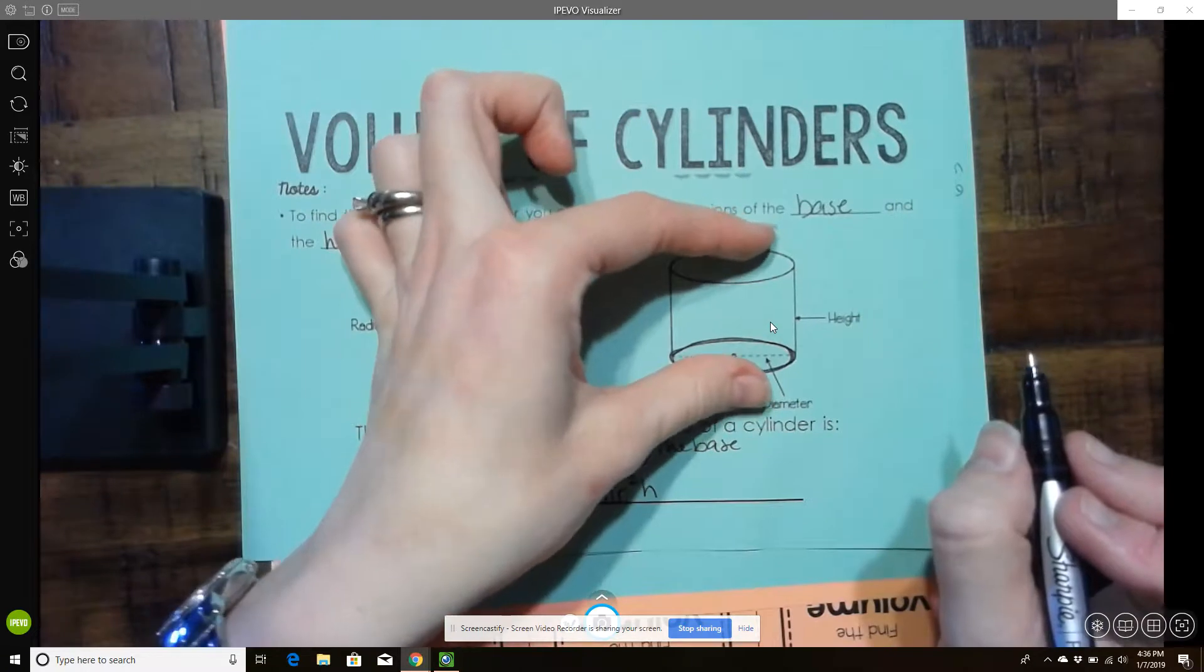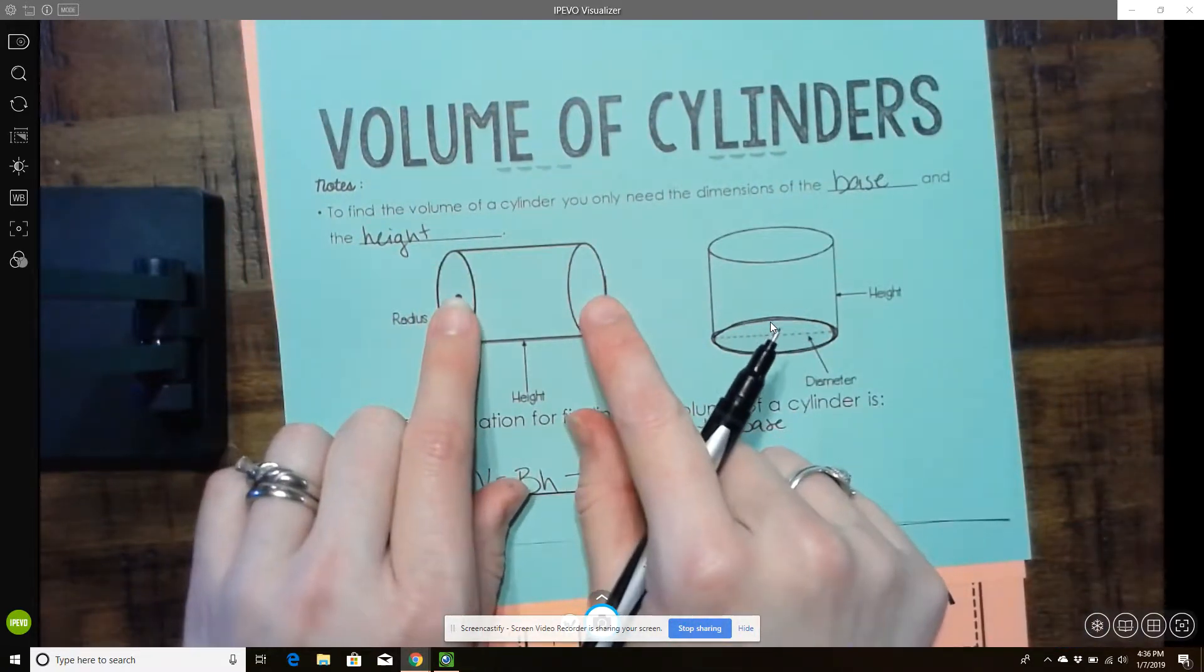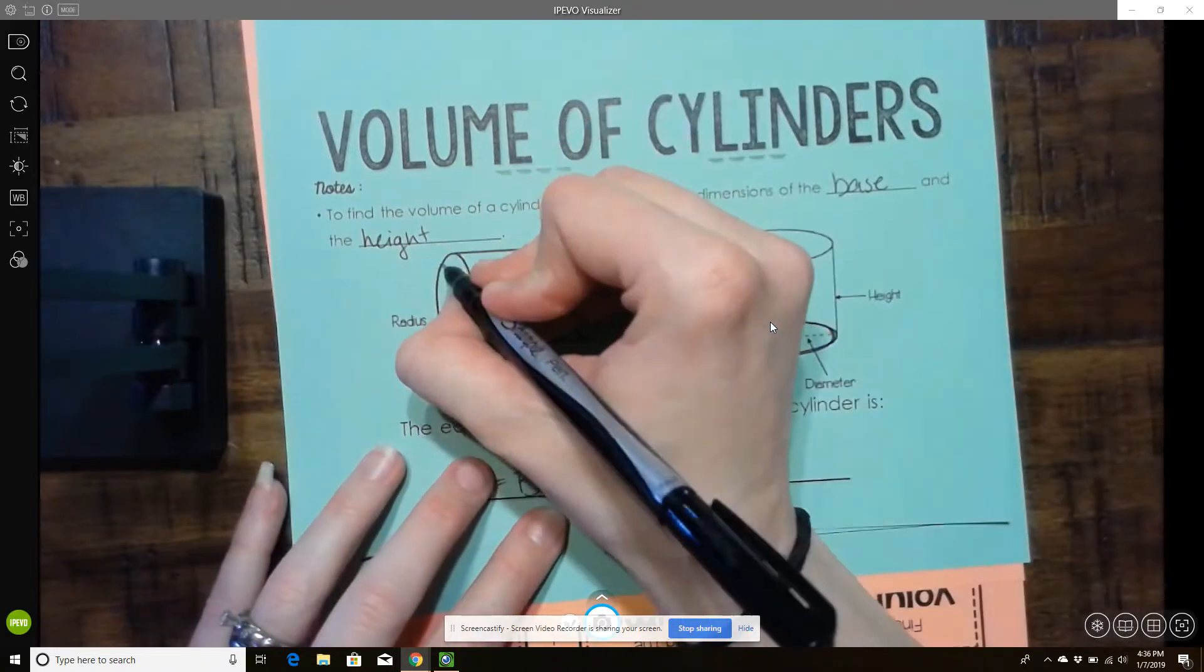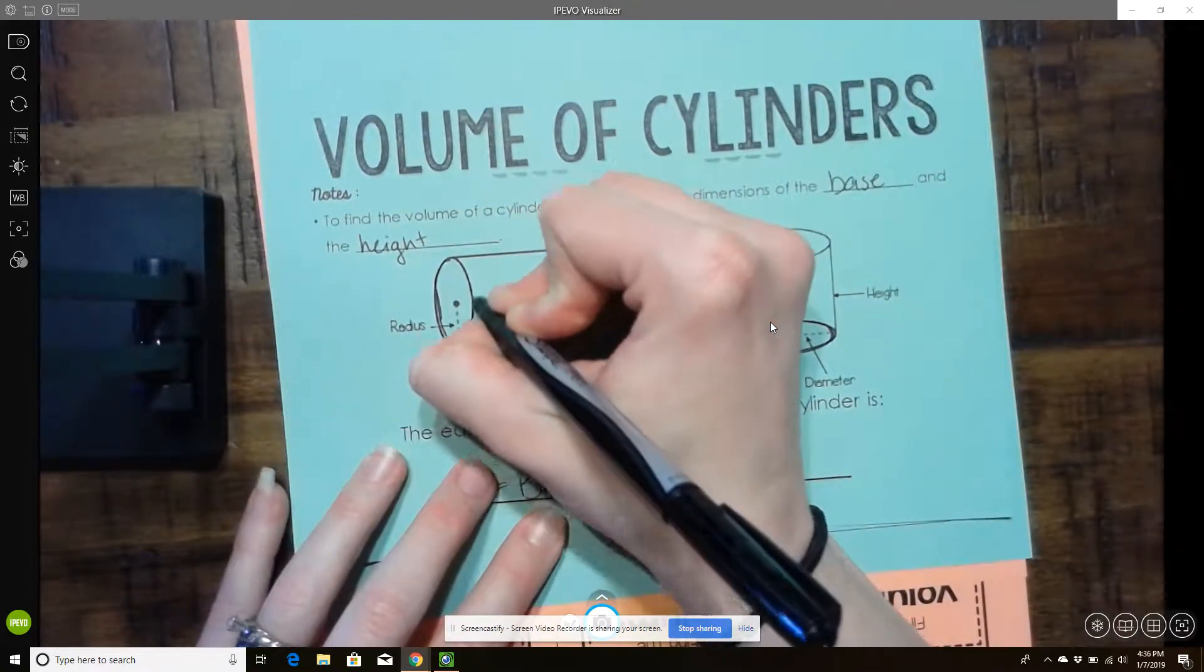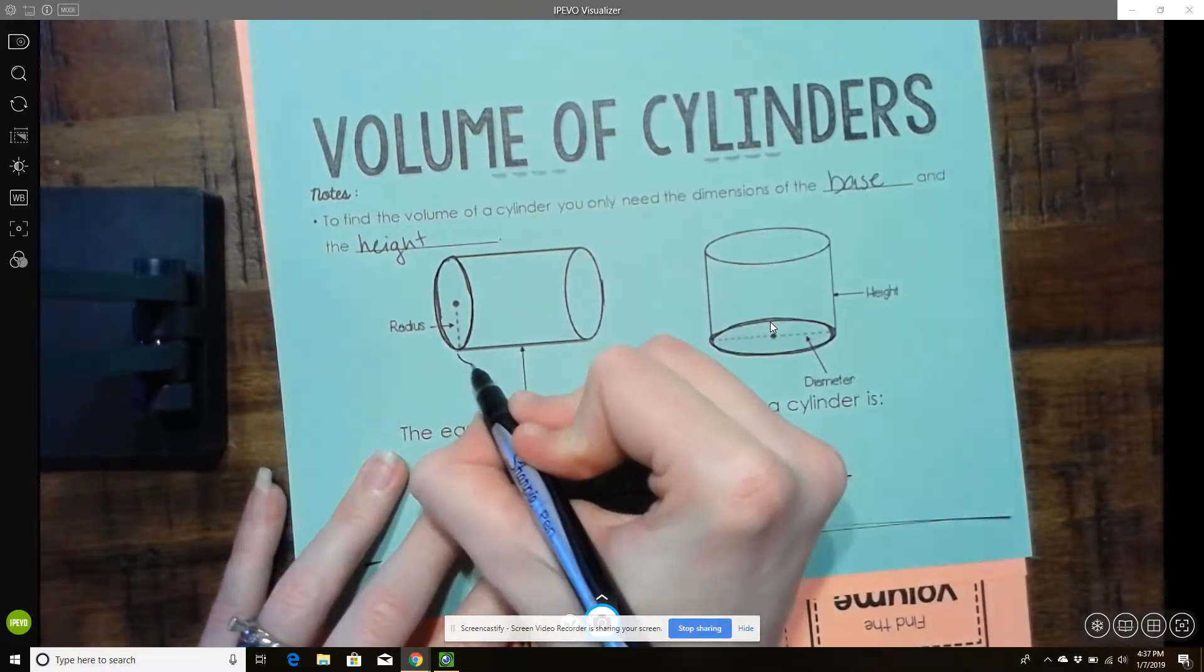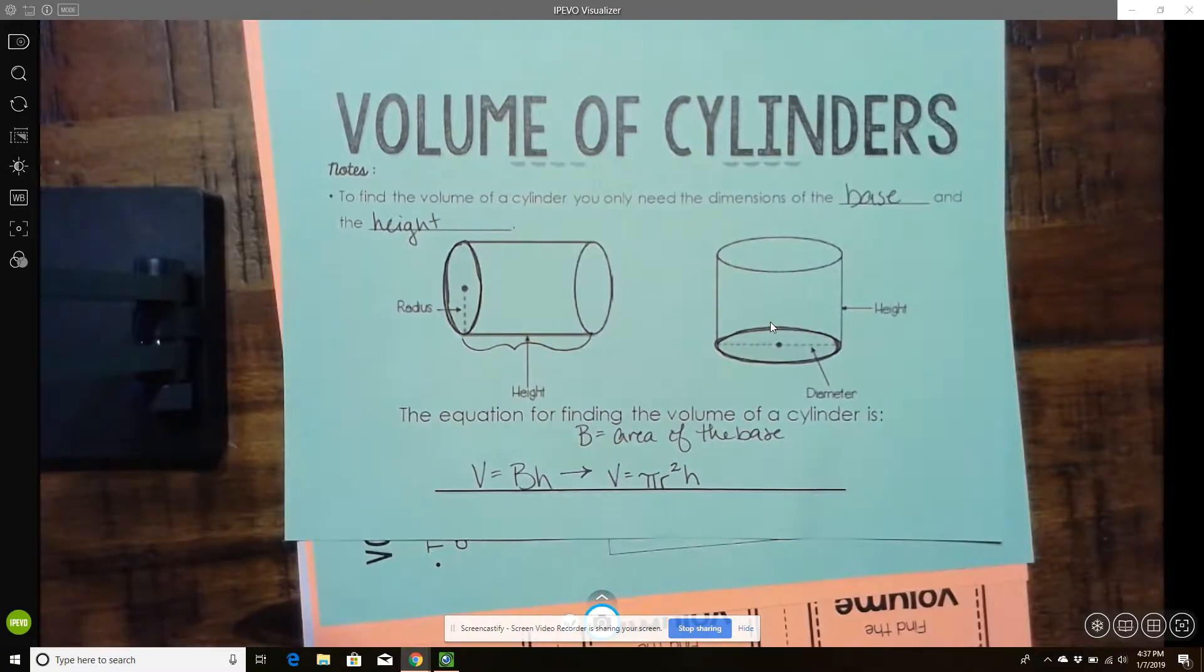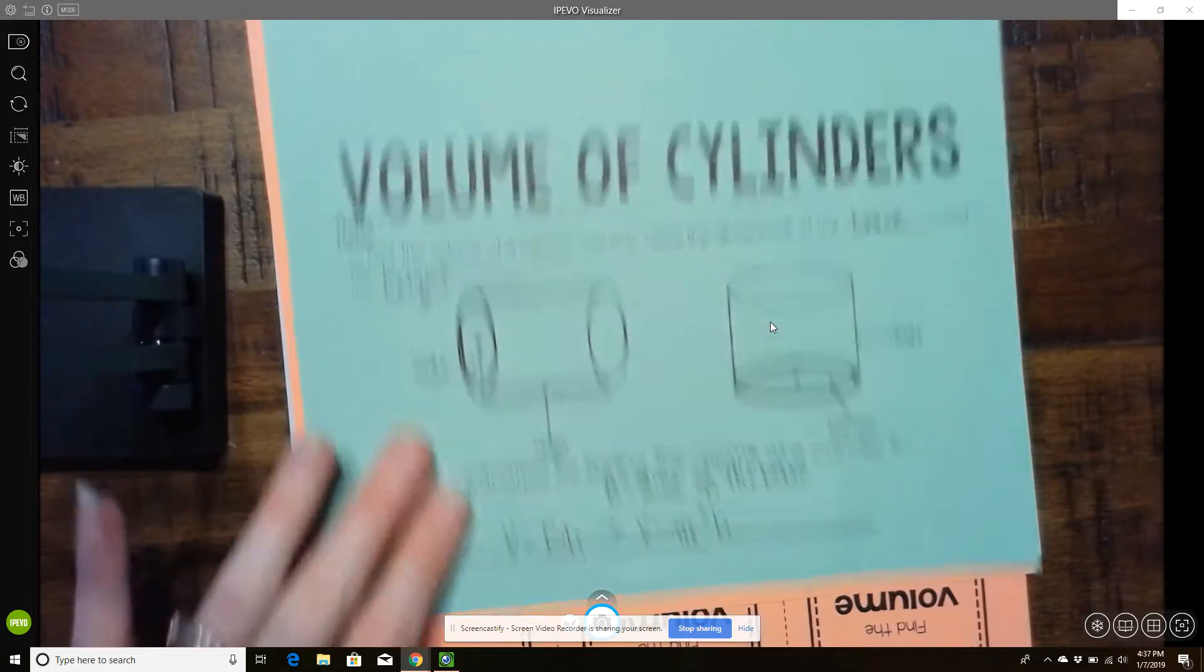So the height is how tall from the base. And so if it's turned this way, the base is not necessarily the shape it's sitting on. It's the shape that it's named for. So again, this circle here is going to be the base. And then the height of the figure is going to be this distance. It's how tall the figure is or what the distance is between the bases.